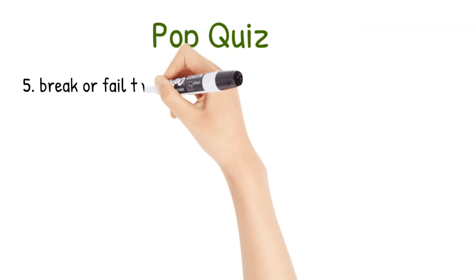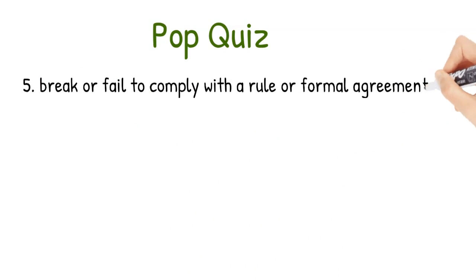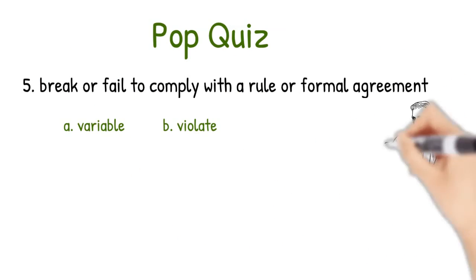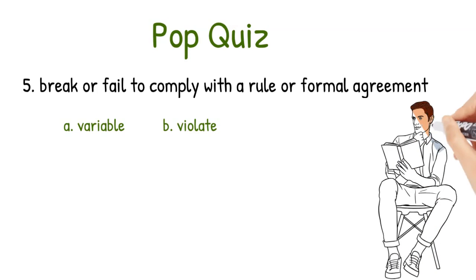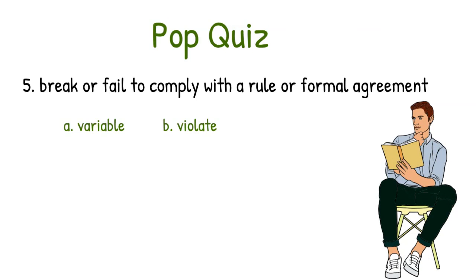Last one. Question number five, break or fail to comply with a rule or formal agreement. Is this A, variable or B, violate? The answer is B, violate.